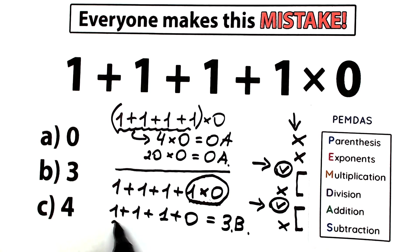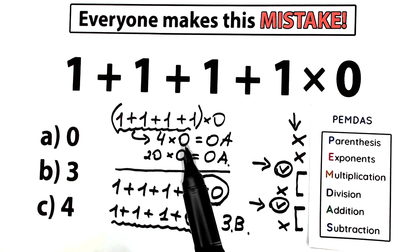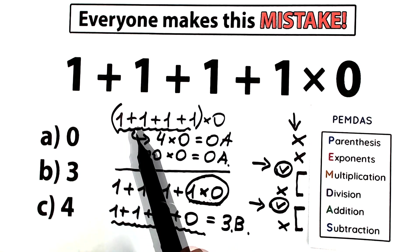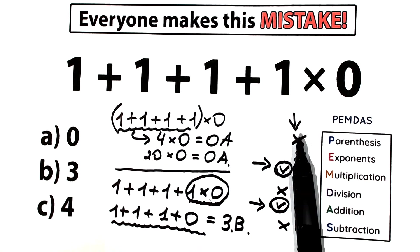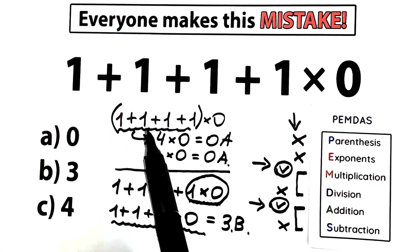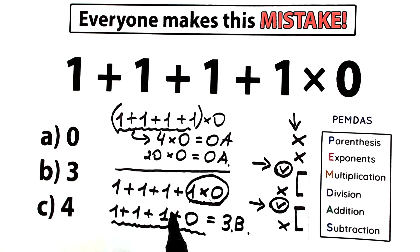So the correct answer is option B. With parentheses the answer would be 0, because parentheses come first and the addition inside the brackets is done first. In our case we don't have any parentheses, so we multiply first, then add all these values. Our answer is option B.